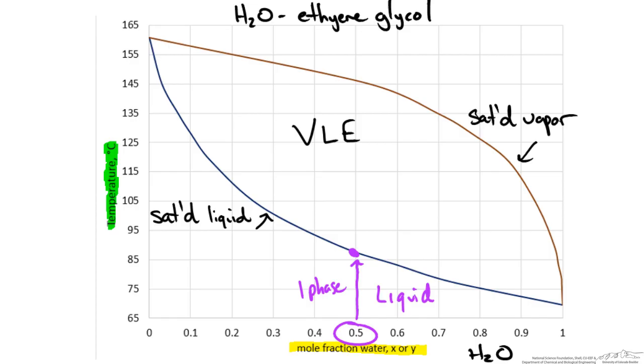So whenever we are within this envelope or on these lines we can draw horizontal lines to determine the composition in each phase. These horizontal lines are known as tie lines and we can draw them because both phases, the liquid and vapor, are at the same temperature.